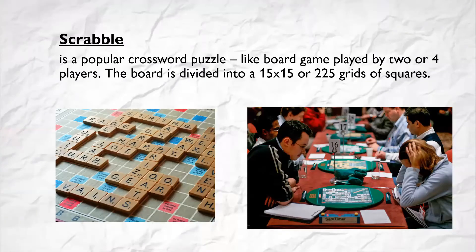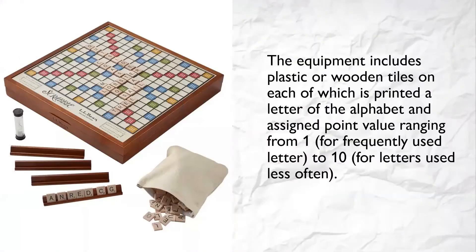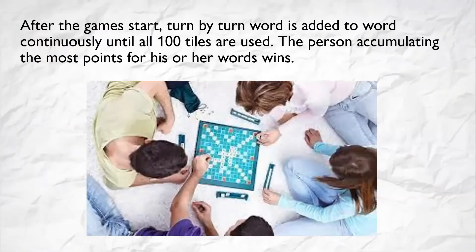Now let's define the word Scrabble. It is a popular crossword puzzle-like board game played by two or four players. The board is divided into a 15 by 15, or 225, grid of squares. The equipment includes plastic or wooden tiles, on each of which is printed a letter of the alphabet and a point value ranging from 1, for frequently used letters, to 10, for letters used less often. After the game starts, turn by turn, word is added to word continuously until all 100 tiles are used. The person accumulating the most points for his or her words wins.